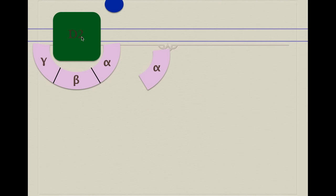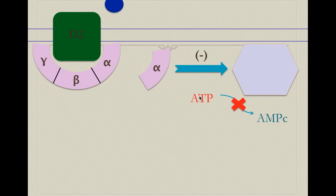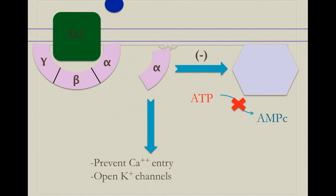On the other hand, D2 and D2-like receptors (D2, D3, and D4) are inhibitory. Upon dopamine binding, the alpha subunit is released but in this case it inhibits adenylate cyclase, so ATP is not transformed into cyclic AMP, decreasing its concentration and inhibiting the cell's functions. Additionally, the alpha subunit prevents calcium entry and opens potassium channels in some cells, causing hyperpolarization of neurons so they do not respond to electrical stimuli and preventing some forms of synaptic plasticity.